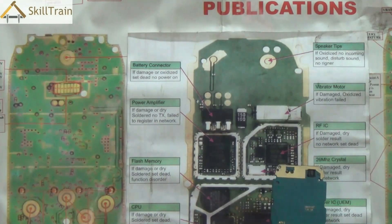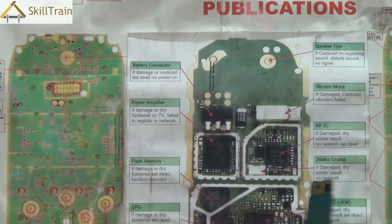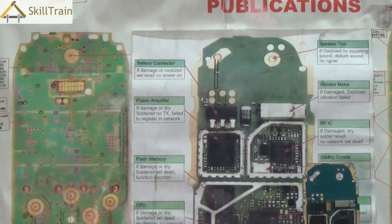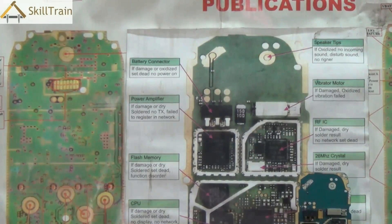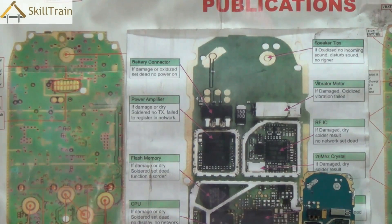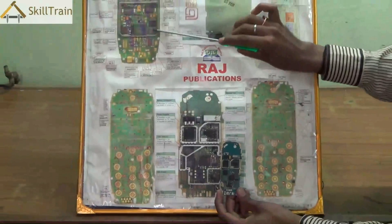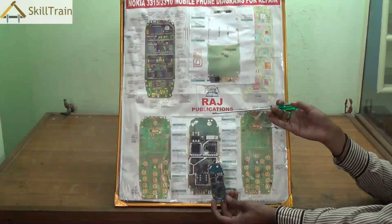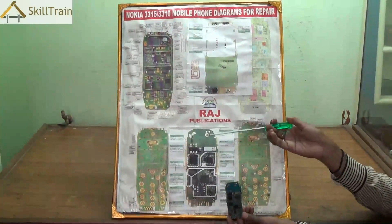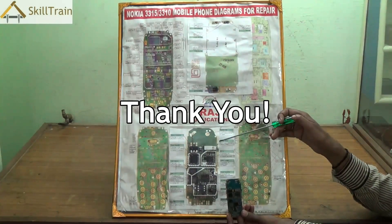Each and every mobile will have very different types of components or component placements, so it's important for you to understand each of these circuit boards very clearly before you start working on them. Most of these circuit diagrams are usually available on the internet, or you might be able to access the service manual of each of these mobile phones. They will clearly tell you how the components are placed, what the connecting points are, where the circuit goes, and how they are connected — and that will help us understand how a mobile phone's PCB functions. Understanding that will help ensure that you are able to repair them effectively. We do hope you would have understood how this entire PCB works, and going forward we will try and work with each of these components to see how we can repair or replace them in future videos. Thank you very much.